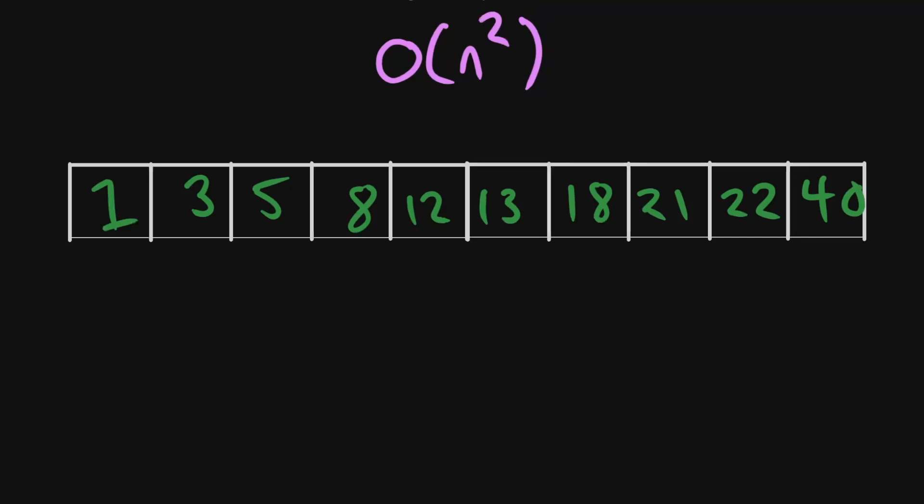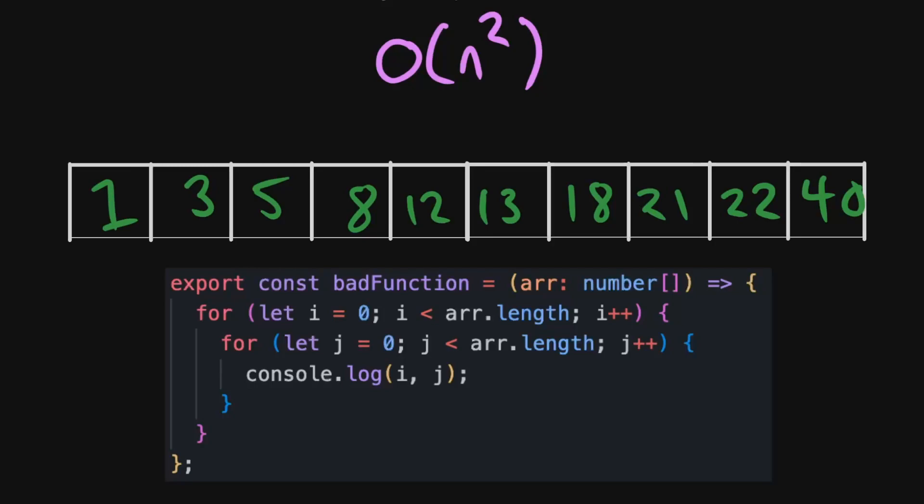Now I'm going to talk about a time complexity that you should probably avoid as much as you can, which is O(n²) or O(n³) or anything else, O(n) to the power four. And what this basically means is as the inputs number increases, your time that the algorithm takes will increase quadratically. So the input could be one, two, you can see that the input number increases the time that it takes or the space that it takes dramatically. So you want to avoid this like the plague, but I'm going to show you an example of how you could achieve something like O(n²).